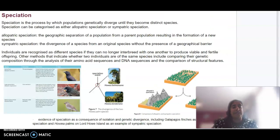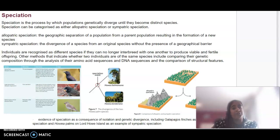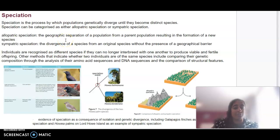In terms of speciation, it is basically the process in which populations diverge until they become a distinct species. For an organism to be recognized as a new species, it needs to be able to produce what we call viable and fertile offspring. The two types of speciation that we look at are allopatric and sympatric. Allopatric speciation is basically where there is a geographic separation of the population from the parent population, and that will result in a new species.